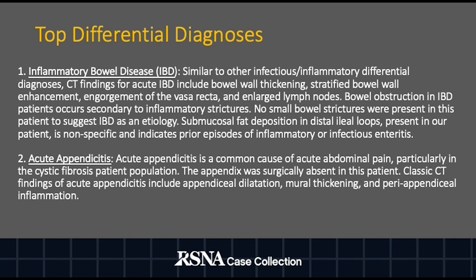Differential diagnoses to consider in our patient include IBD. This would typically present with bowel wall thickening, stratified bowel wall enhancement, engorgement of the vasa recta, enlarged lymph nodes, or inflammatory strictures of the small bowel — all absent in our patient.